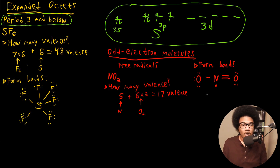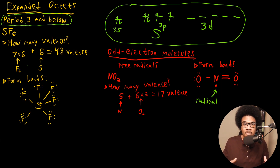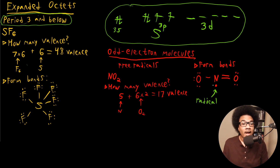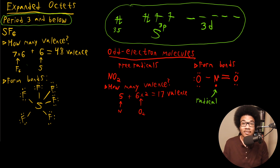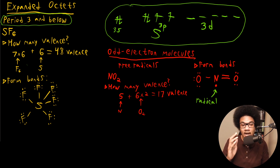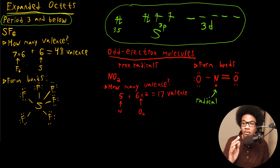A radical electron is any electron that is unpaired. Free radicals create very unstable and highly reactive molecules. This NO2 molecule is very reactive because nitrogen is still desperately seeking to fill its octet. Any molecule that has this type of lone radical electron is going to be very reactive and unstable — it wants to form a bond, wants to grab a lone pair of electrons, anything it can do to fill its octet.